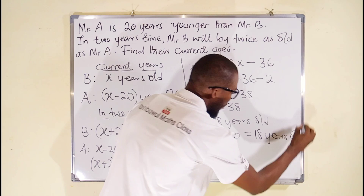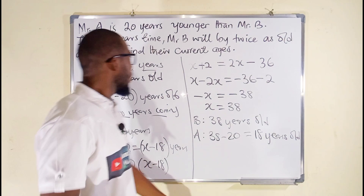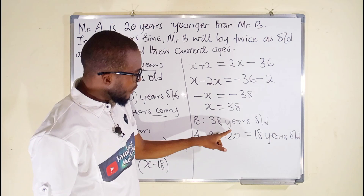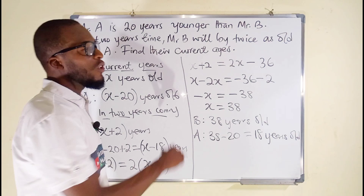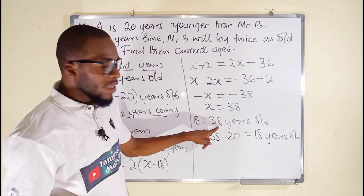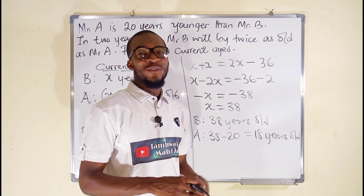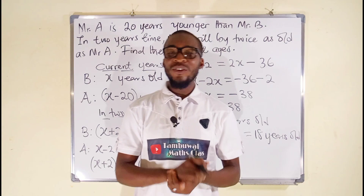Currently Mr. B is 38 years old while Mr. A is 18 years old. Let's verify: the difference between 38 and 18 is 20, confirming Mr. A is 20 years younger — that statement is true. Adding two years: Mr. B becomes 40 and Mr. A becomes 20, and 40 is indeed twice 20. The answer is correct. Their respective current ages are 38 and 18. Thank you for watching — share with your learning colleagues, subscribe to my YouTube channel, and hit the like button.